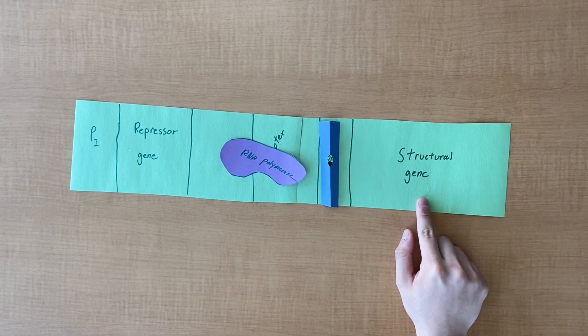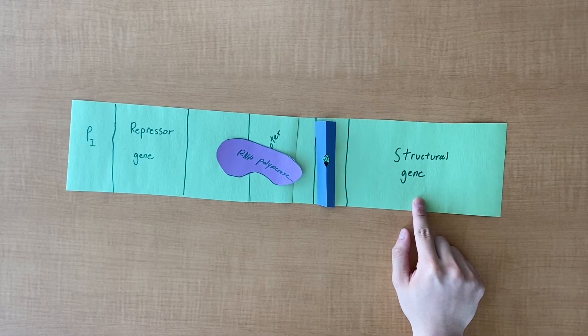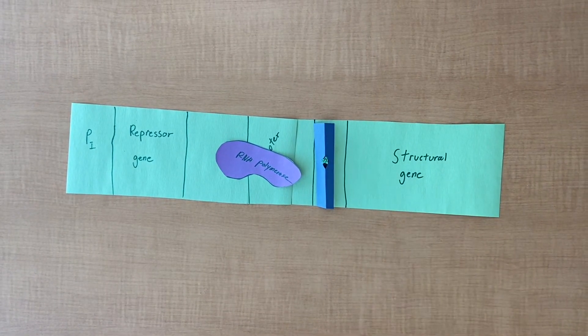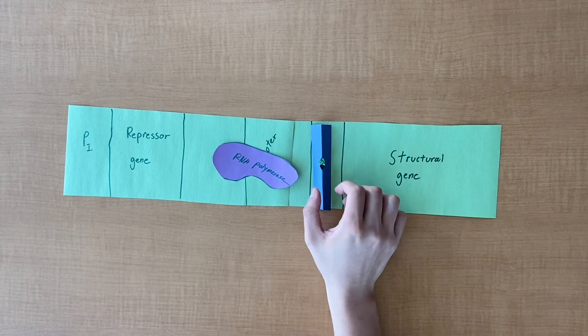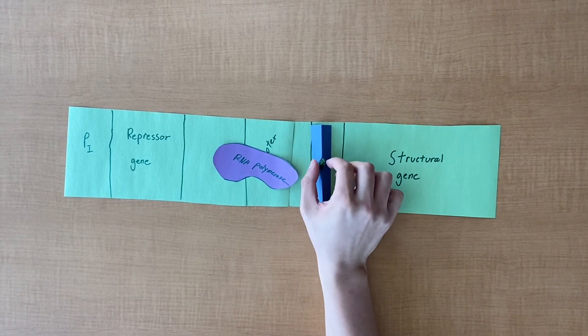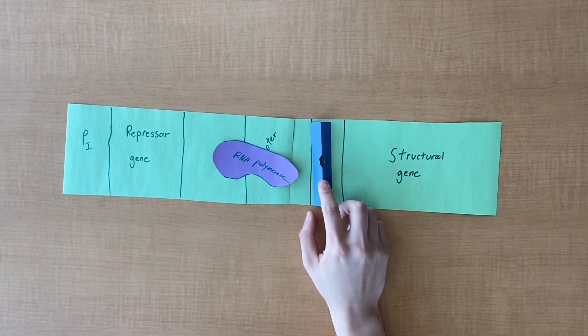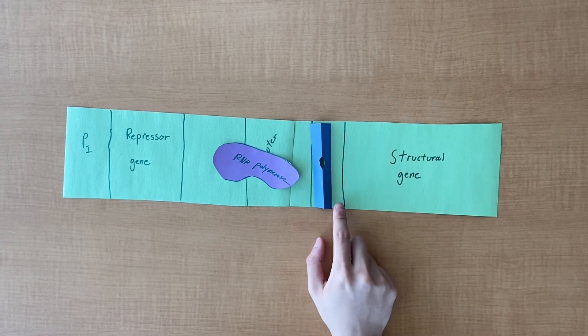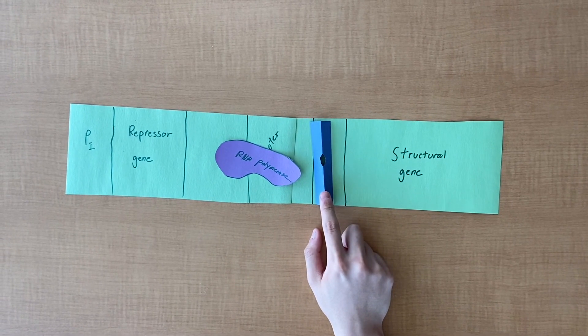Structural gene is the gene of interest that codes for a protein product. In negative inducible regulation, the repressor protein is active without the effector molecule. Active repressor binds to the operator site and prevents transcription from happening.